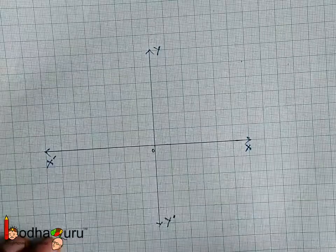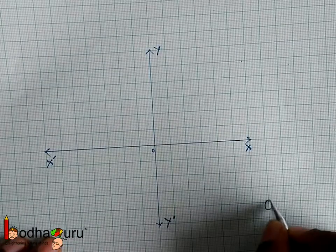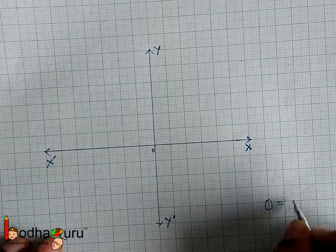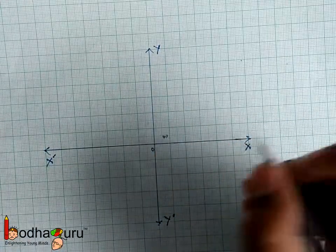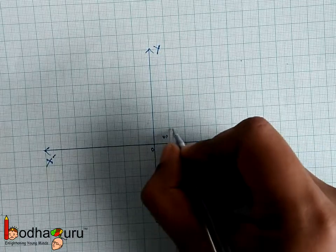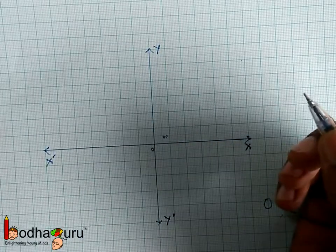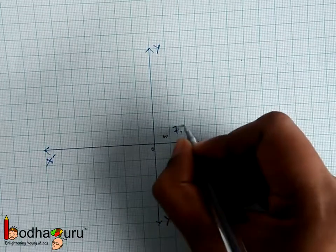The system is quite similar to coordinate geometry we learned in the previous class. Remember we plotted a point on a plane, that is a graph paper, based on two values which is called coordinate of that point.